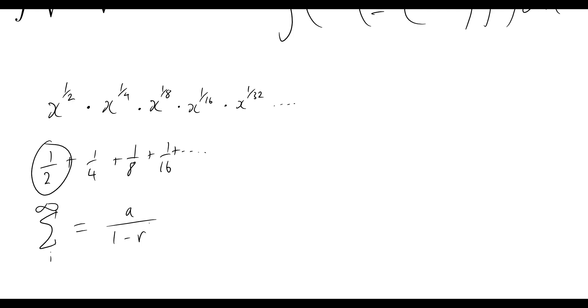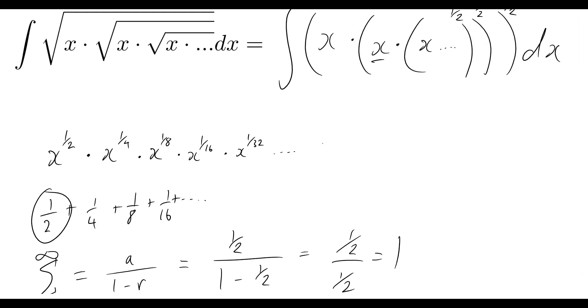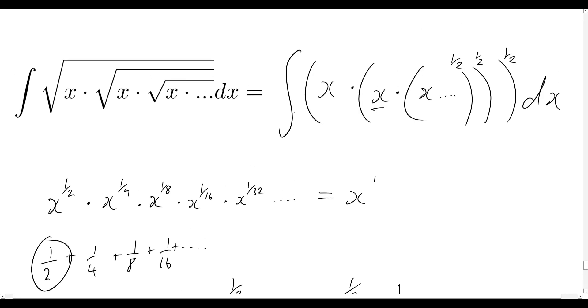So that would be a half, and then r is our common ratio here. Now our sum of this sequence becomes one half over one minus one half, which equals obviously one half over one half, which equals one. So we can say that multiplying all of these together is the same thing as saying x to the power of one. That's in fact what the square root of x times the square root of x times square root of x, so on and so forth, is actually just equal to x.